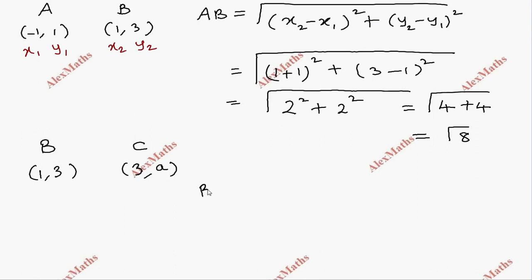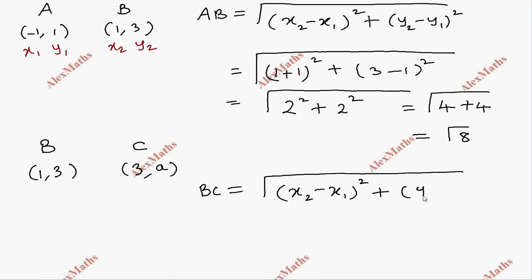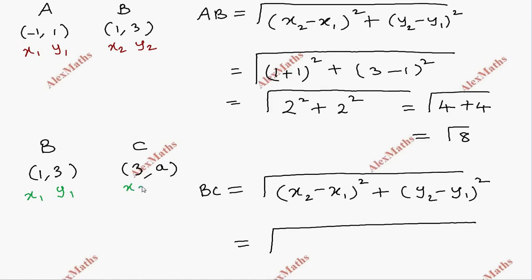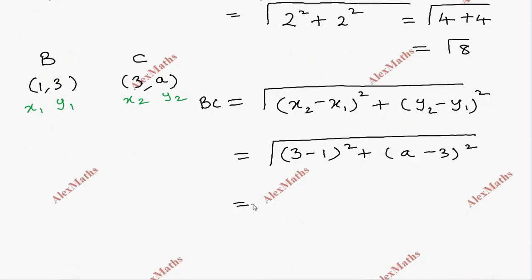For BC, once again I am using the distance formula. The formula is the square root of (x2 minus x1) whole square plus (y2 minus y1) whole square. Naming the points x1, y1 and x2, y2, it will be the root of (3 minus 1) whole square plus (a minus 3) whole square, which gives root of 2 square plus (a minus 3) whole square.